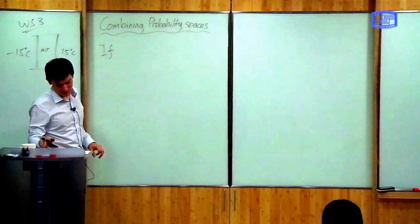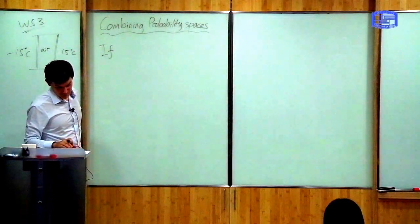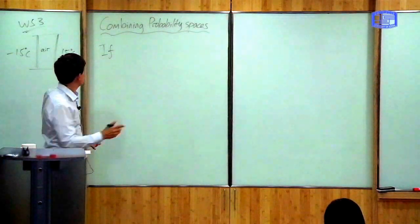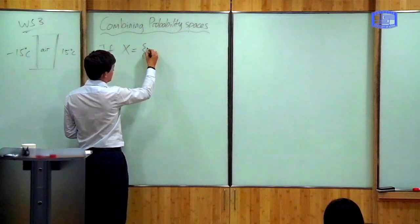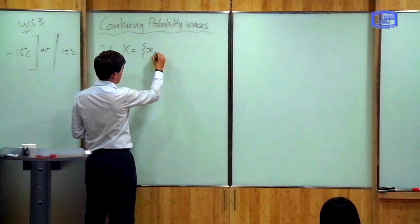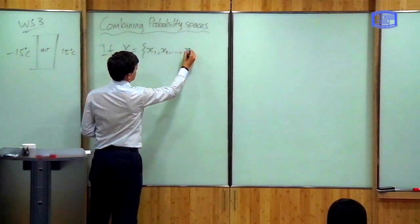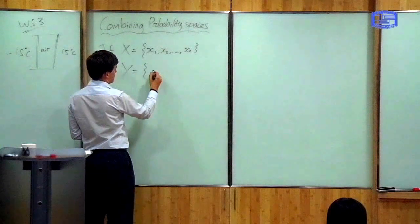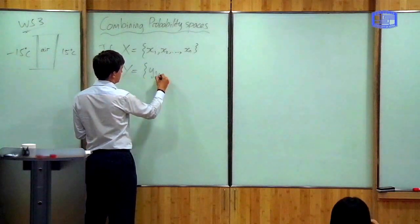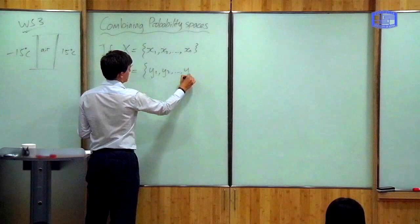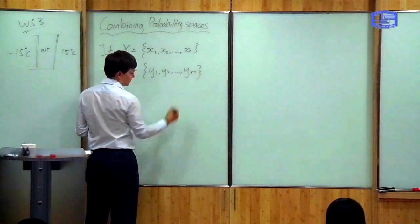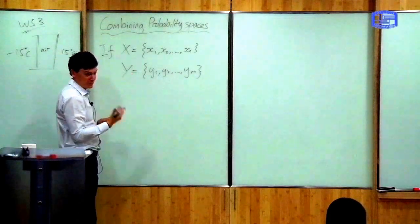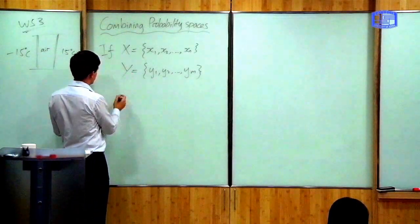Suppose we've got two sets — I'm going to suppose it's finite, but there's no reason it needs to be. Suppose this is one set of events and this is another set of events, like M, let's say. They don't need to have the same sort of events. Then we can define the set of total possible events by taking what's called the Cartesian product.